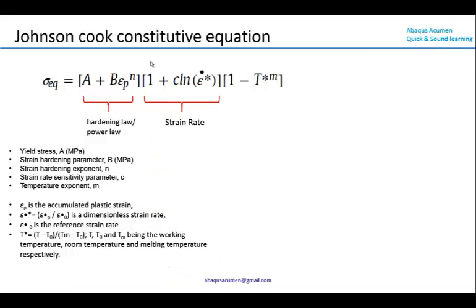The second term accounts for the strain rate effect in the model, represented as (1 + C·ln(strain rate ratio)), where C is the strain rate sensitivity parameter. This term accounts for the strain rate sensitivity of the material. The third term accounts for the temperature effect, calculated using T raised to m, where m is the temperature exponent. All parameters A, B, C, n, and m can be estimated through experimental tests.